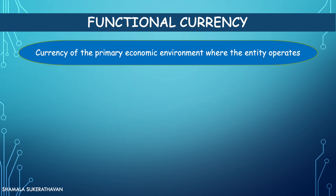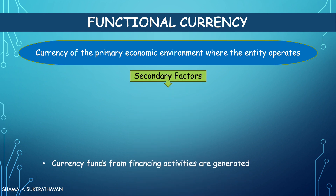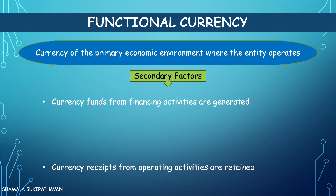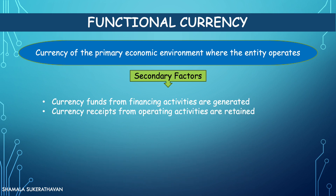In the event the primary factors are inconclusive, an entity should consider the following secondary factors: 1. The currency in which funds from financing activities are generated — that is, the currency in which debt and equity instruments are issued. 2. The currency in which receipts from operating activities are usually retained.